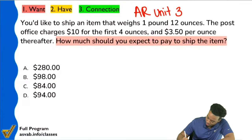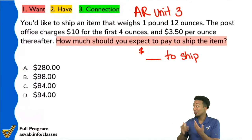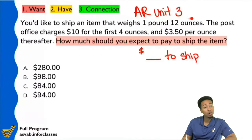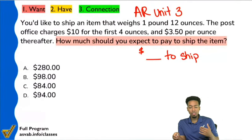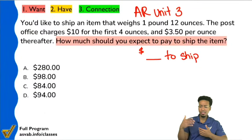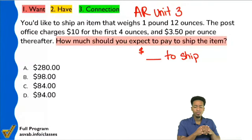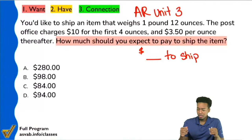Any time you can relate to the context or imagine what's going on in a word problem, do so. One of my favorite phrases in math is: when in doubt, draw it out — whenever you're in doubt about the problem, try to imagine it. So we know we want the cost to ship. Step two: now that we know what we're looking for, I only care about information related to shipping that item. You'd like to ship an item that weighs one pound 12 ounces. The post office charges $10 for the first four ounces and then $3.50 per ounce thereafter.